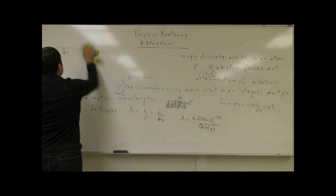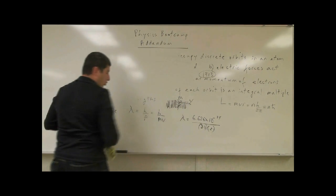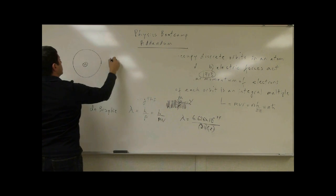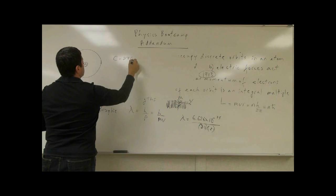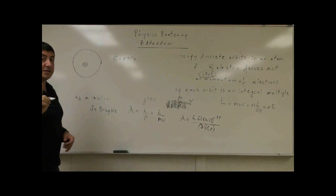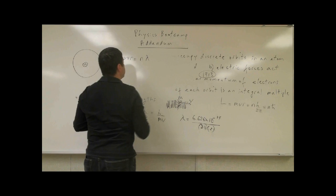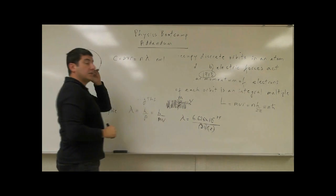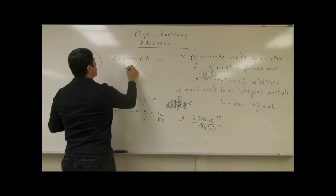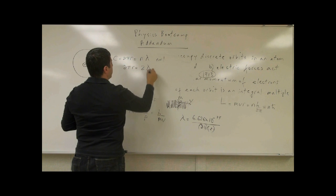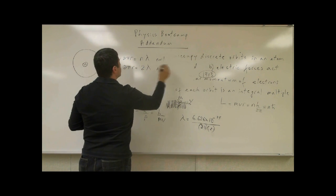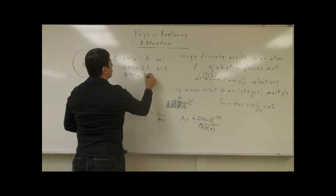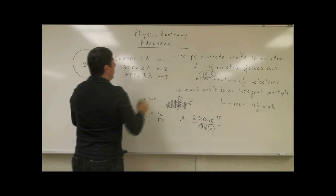He said the circumference of the orbit around the nucleus — which is 2πr — in the n equals 1 orbit would be one multiple of the wavelength. In the n equals 2 orbit, the circumference would equal two times the wavelength, so n is 2. In the third orbit, 2πr would be three times the wavelength, and so on as we move outward.